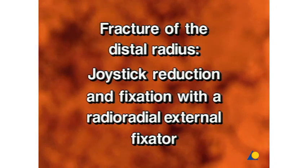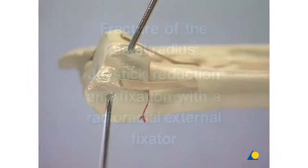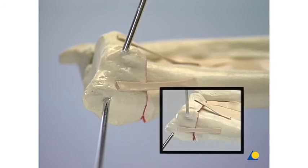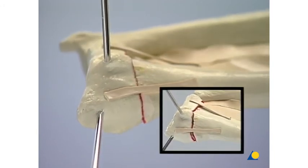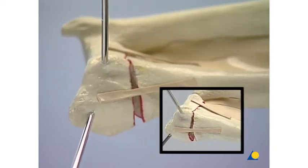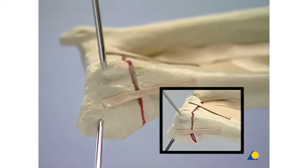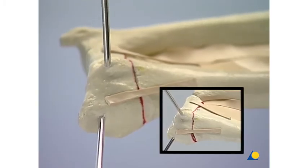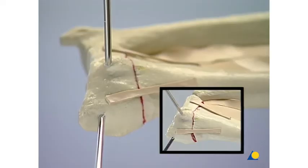Fracture of the distal radius, joystick reduction, and fixation with a radio-radial external fixator. A 2.5mm threaded K-wire is inserted into the tuberculum of Lister in the sagittal plane and a second K-wire is inserted into the styloid process of the radius in the frontal plane. The wires serve as joysticks for the reduction of the fracture in both main planes. The flexion-extension alignment and the correct radio-ulnar alignment of the fracture are easily attainable. After reduction, these two K-wires are combined with two additional threaded K-wires inserted into the proximal main fragment to form a radio-radial external fixator.